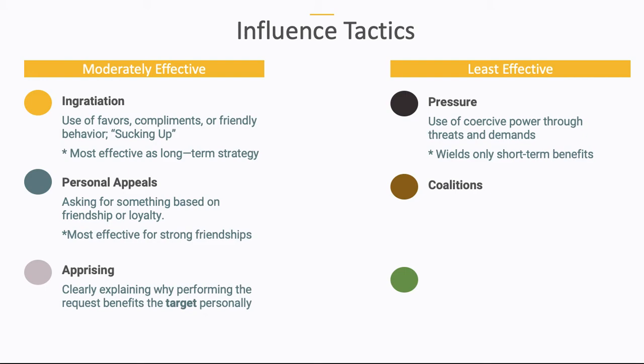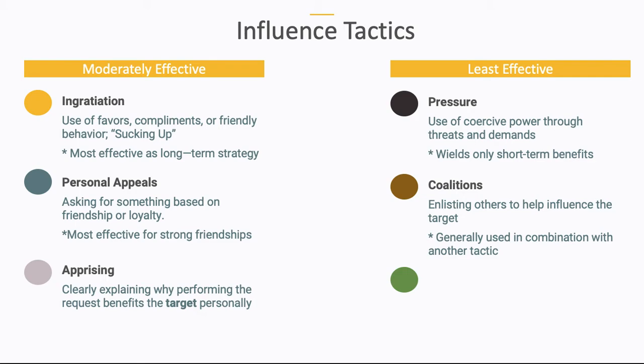The second least effective influence tactic is a coalition. This occurs when people form a group in order to help influence the target. Rather than just one person trying to change someone's mind, they get several people together. For example, if 10 students emailed me trying to get out of the final project, that would be a coalition — a united front trying to get change. Generally, coalitions are used in combination with another tactic. Employees threatening to go on strike have formed a coalition and are using a pressure technique.